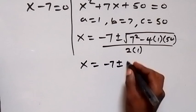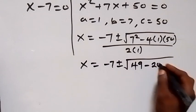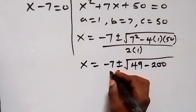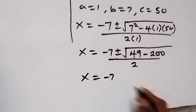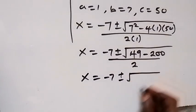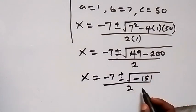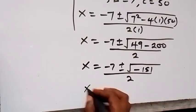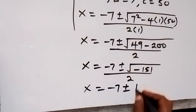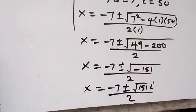Simplifying: x equals minus 7 plus or minus square root of 49 minus 200, all over 2. This gives us 49 minus 200 equals minus 151 under the square root. Since we have a negative under the square root, we introduce i, so x equals minus 7 plus or minus square root of 151 times i, all over 2.